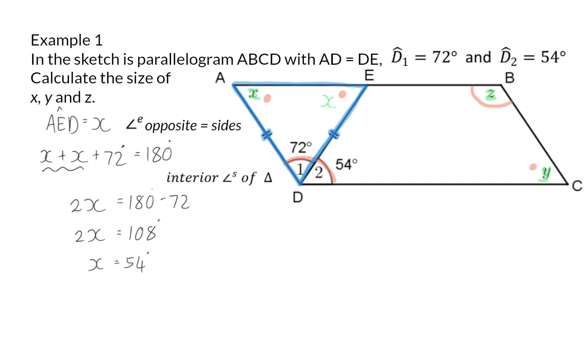I've already mentioned that Y will be the same size as angle A, which is X, and now that we know that X is 54 degrees, Y will also be 54 degrees, and the reason here will be opposite angles of a parallelogram.